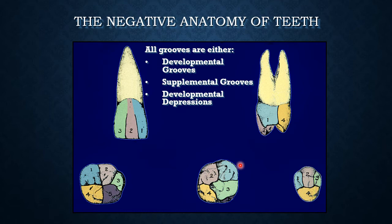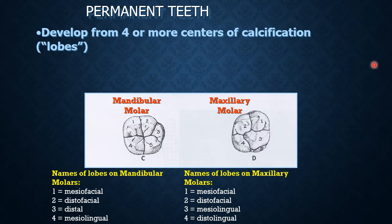Caries can develop in these grooves if proper hygiene is not maintained and the individual has high caries risk. Fissure caries is a type of caries that develops from developmental grooves. As clinicians and dentists, we must look for caries in these negative anatomical landmarks, specifically in individuals who are not maintaining proper oral hygiene and have high caries risk.